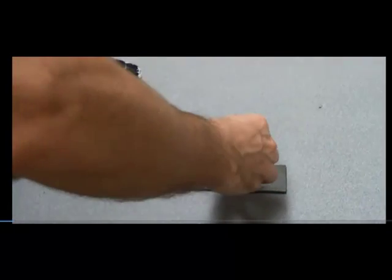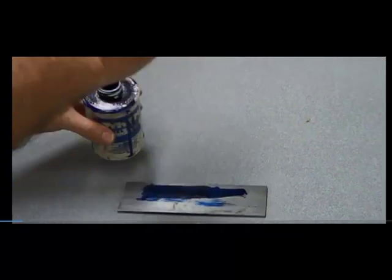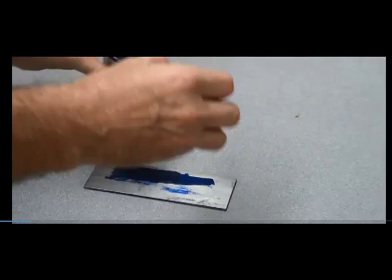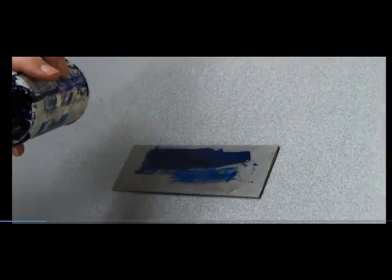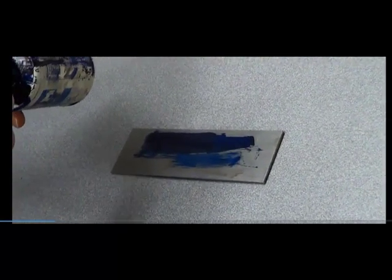Okay, we are applying layout fluid to the steel so that it gives you the backdrop. So when we scribe lines using the vernier height gauge, they'll show up.